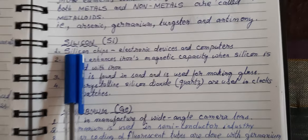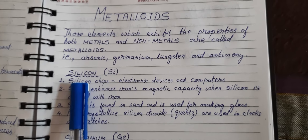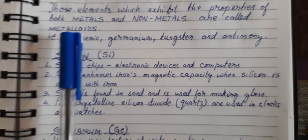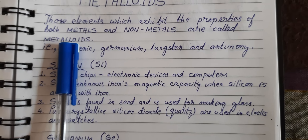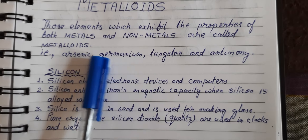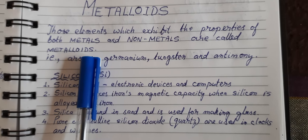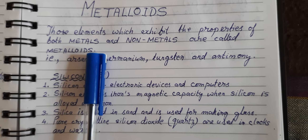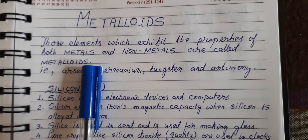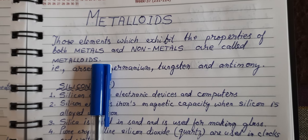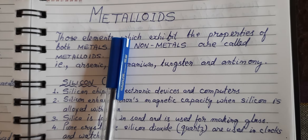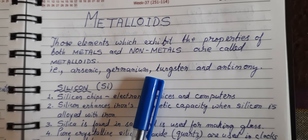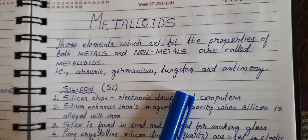The first metalloid to be discussed is silicon. Metalloids have both properties of metals and non-metals. This makes some of these metalloids conductors of electricity, meaning they can pass electricity through them. This is the reason some metalloids are alloyed with other metals and used in electrical circuits of electrical gadgets.